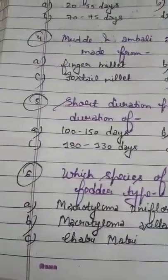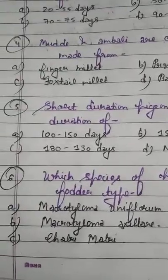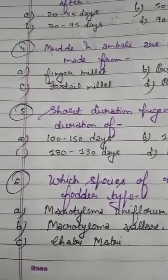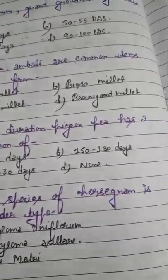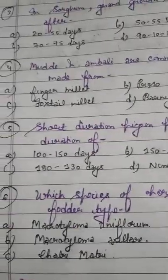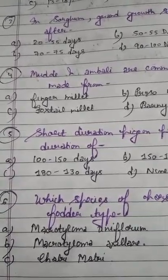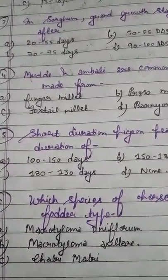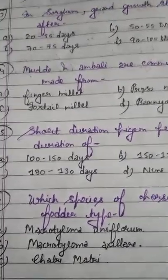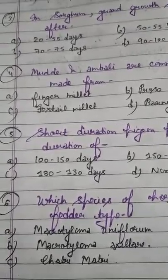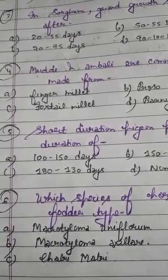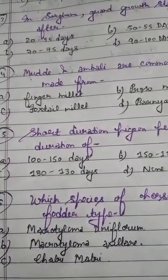Question number 6: which species of horse gram is fodder type? Option A: Macrotyloma uniflorum. Option B: Macrotyloma axillare. Option C: Chattarimantri. Horse gram is also called kulti — please remember. Macrotyloma uniflorum is a pulse; Macrotyloma axillare is the fodder type — please remember. Chattarimantri is intentionally placed here as a distractor — it is the common name of Lathyrus, also called Khesary, which contains a neurotoxin and has nothing to do with horse gram.